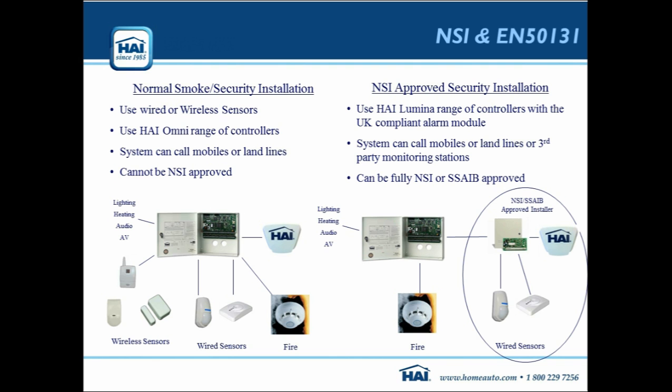EN 50131 requires that the only person who can change the behaviour of an alarm system is actually the manufacturer. Being as our HAI control platform is a home automation system, one of its values is being able to configure and program it to do intelligent things — which is directly orthogonal to one of the directives in EN 50131. So we cannot make the Omni system compliant to that directive. That's why we put together the option on the right where all the alarm functionality is broken out into its own self-contained unit compliant to EN 50131, linked to the HAI controller via an RS232 cable.